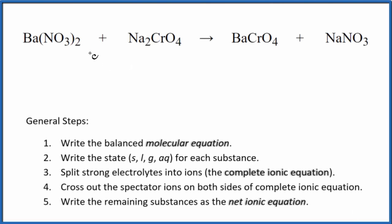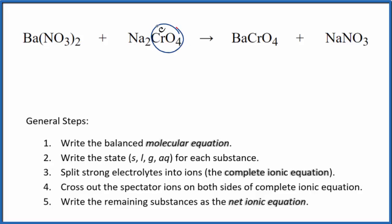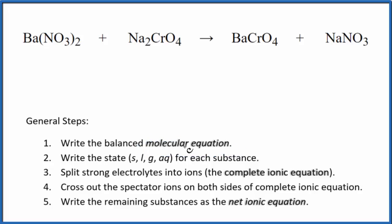In this video, we'll write the balanced net ionic equation for Ba(NO₃)₂ plus Na₂CrO₄. This is barium nitrate, and this is sodium chromate. The first thing we need to do with net ionic equations is balance the molecular equation. This is the molecular equation.